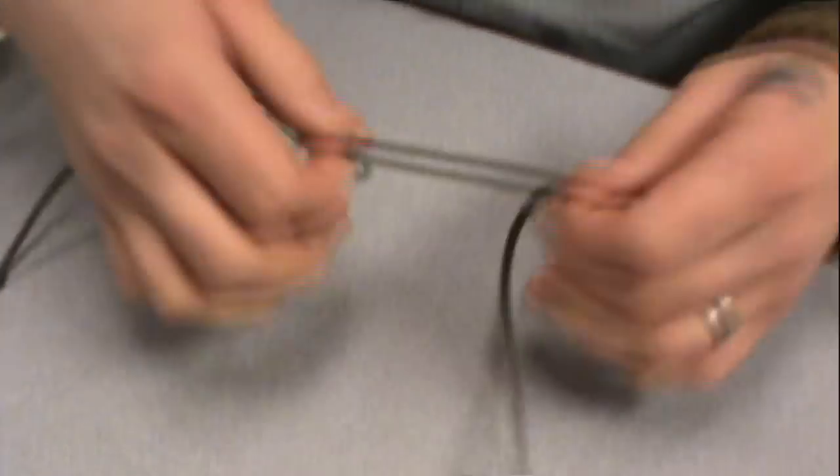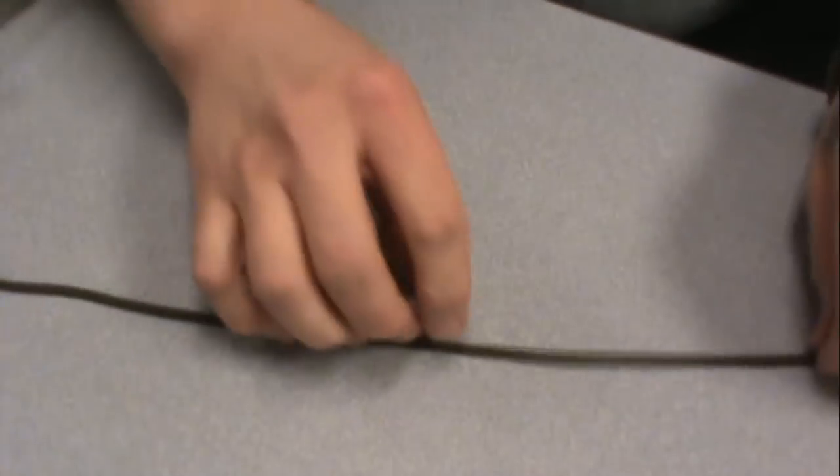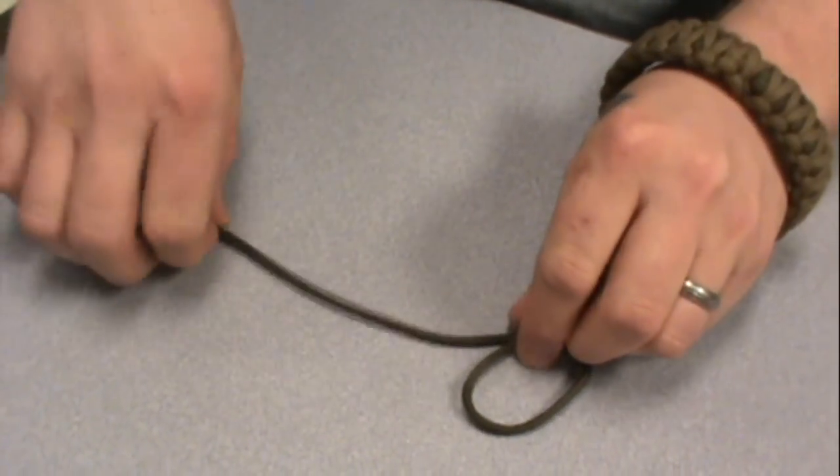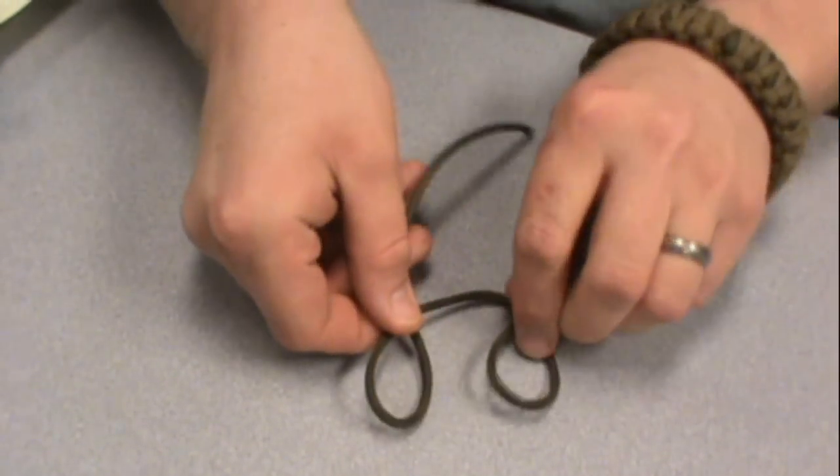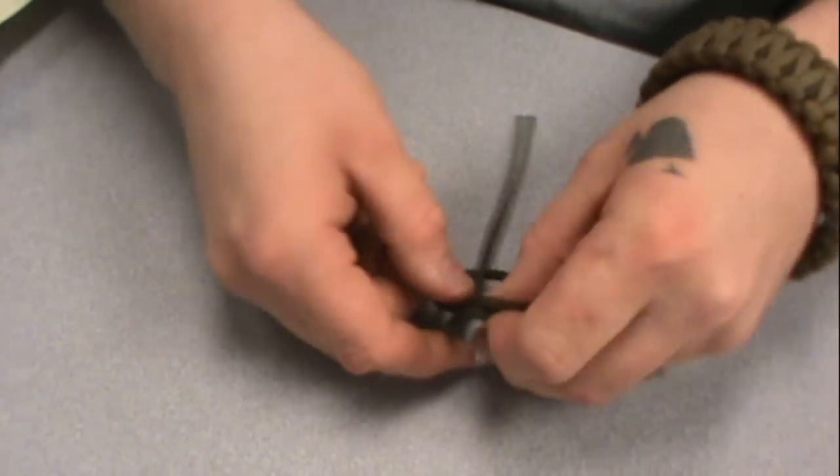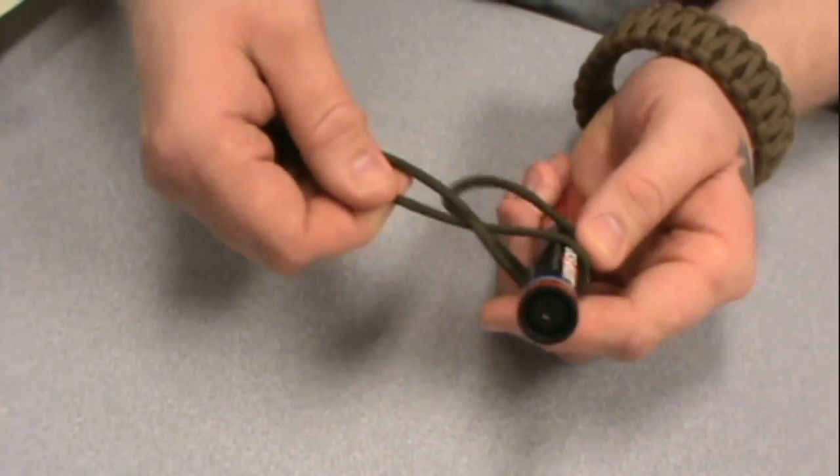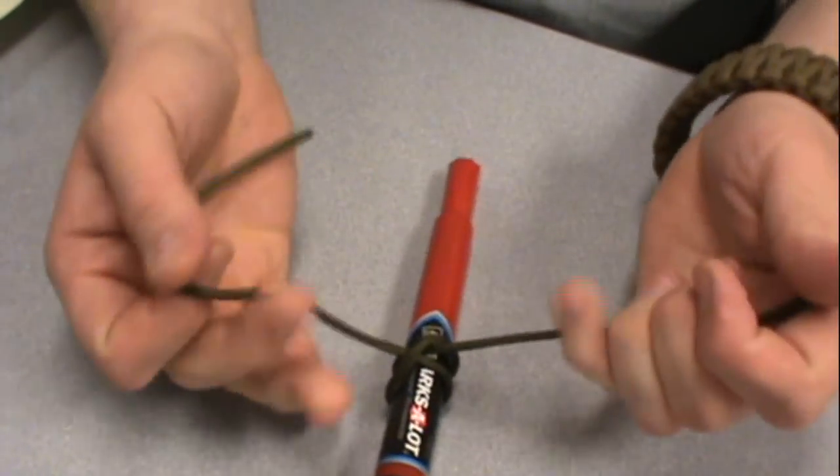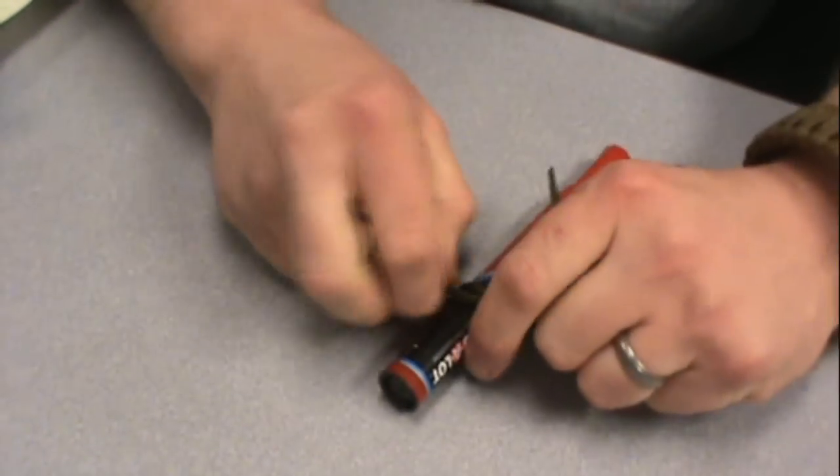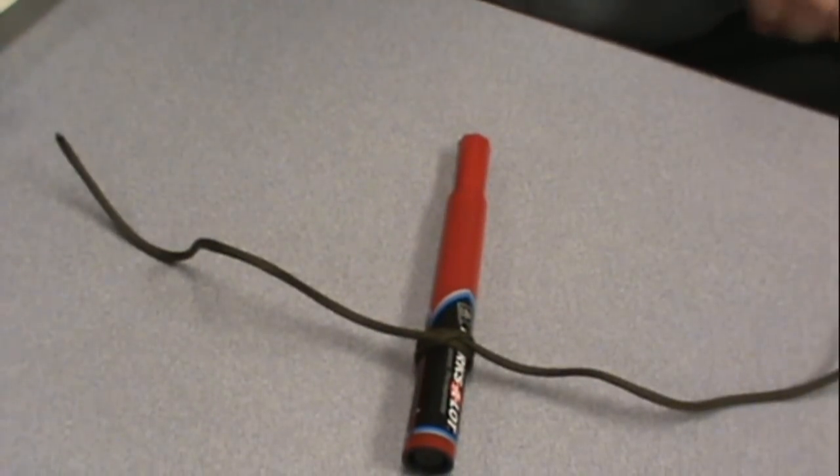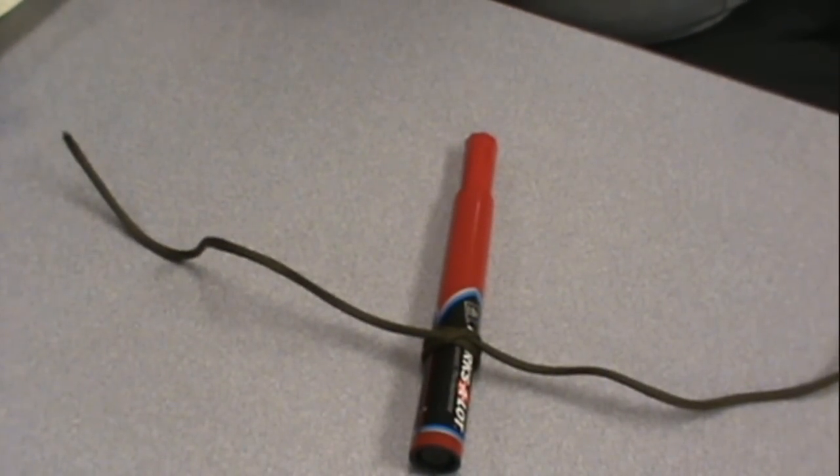Do that again for you. Loop on top. Loop on bottom. Cross them over. Hold them tight. Pull it tight. And then tighten it. Push them together. And pull tight a little bit more. That is a clove hitch. Very simple knot.